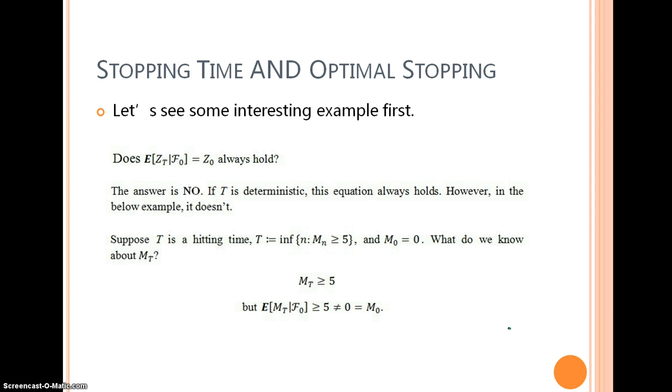Suppose t is a hitting time. You can choose any real number here, but I choose 5 as my lucky number. So what do we know about M_t now? M_t is larger or equal than 5. So the expectation of M_t should also be larger or equal than 5, which is not equal to 0. This is a direct violation of the conclusion that I asked you to remember just now. That means in this special scenario, this equation doesn't hold.